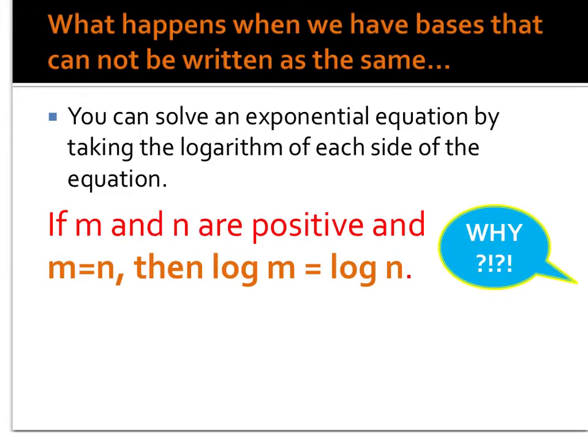Now of course you will encounter problems where you cannot write the base as the same number. When this happens we're going to apply this property here. It says anytime m and n are positive values that are separated by an equal sign, I'm allowed to just take the log of each side. Now taking the log of each side sounds a little weird, so I'm going to show you why we are allowed to do that.